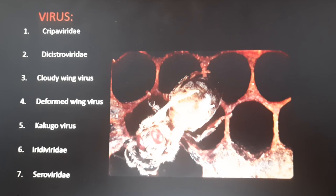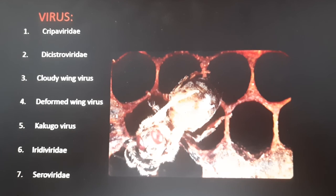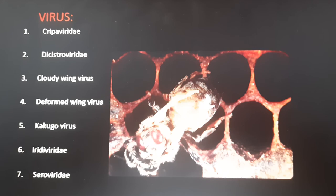The viral pests are Cripaviridae, Dicistroviridae, cloudy wing virus, deformed wing virus — this is the picture of the deformed wing virus — Kakugo virus, Iflaviridae, Circoviridae and Lake Sinai virus.